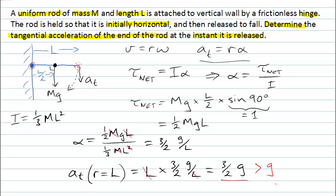To test whether you've understood this process, a good exercise is to now try to calculate where abouts along this rod, the point is that it has a tangential acceleration exactly equal to G.